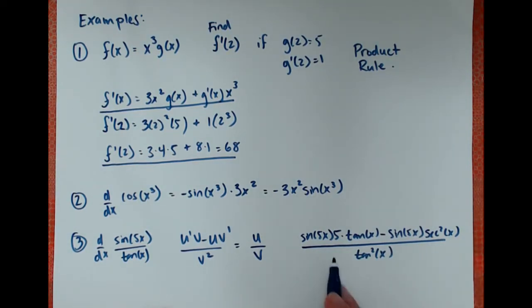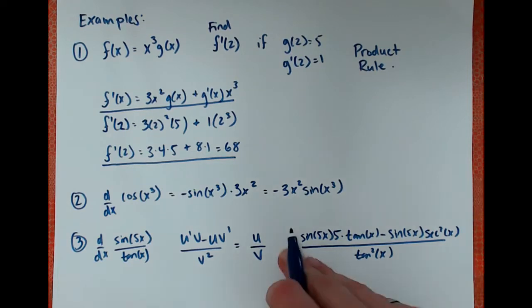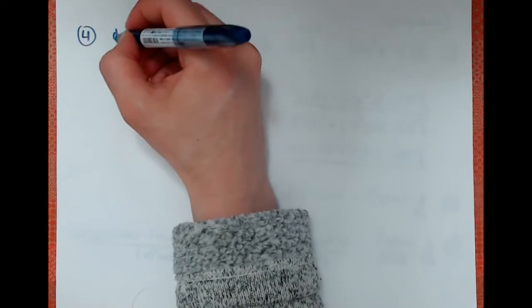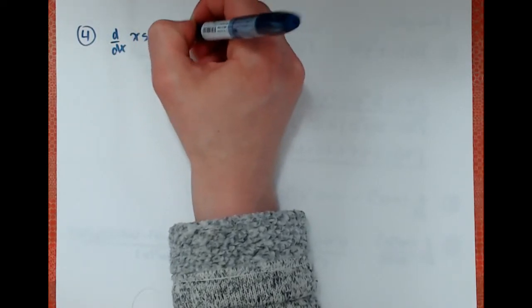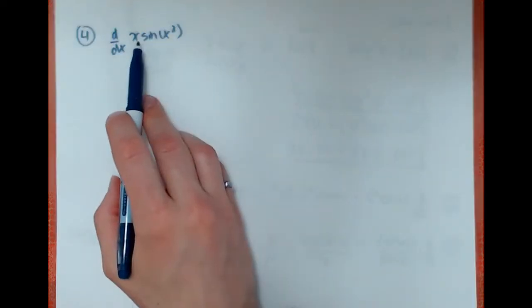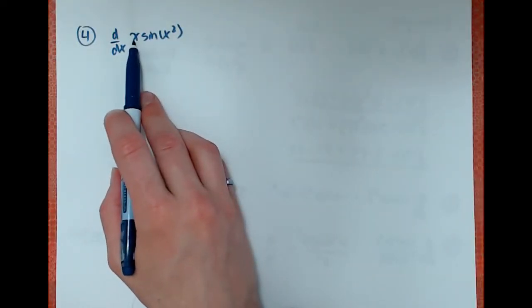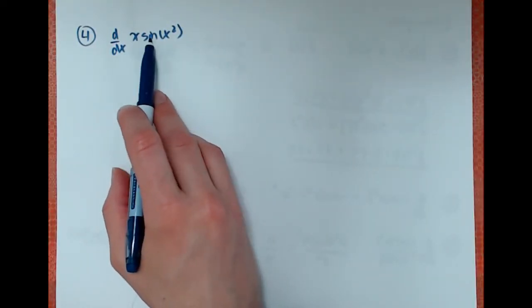In this case you could simplify this a tiny bit, but not much. Now for a fourth example: d over dx of x sine x squared. Here we have product rule — we have x times sine of x squared — so that's product rule.